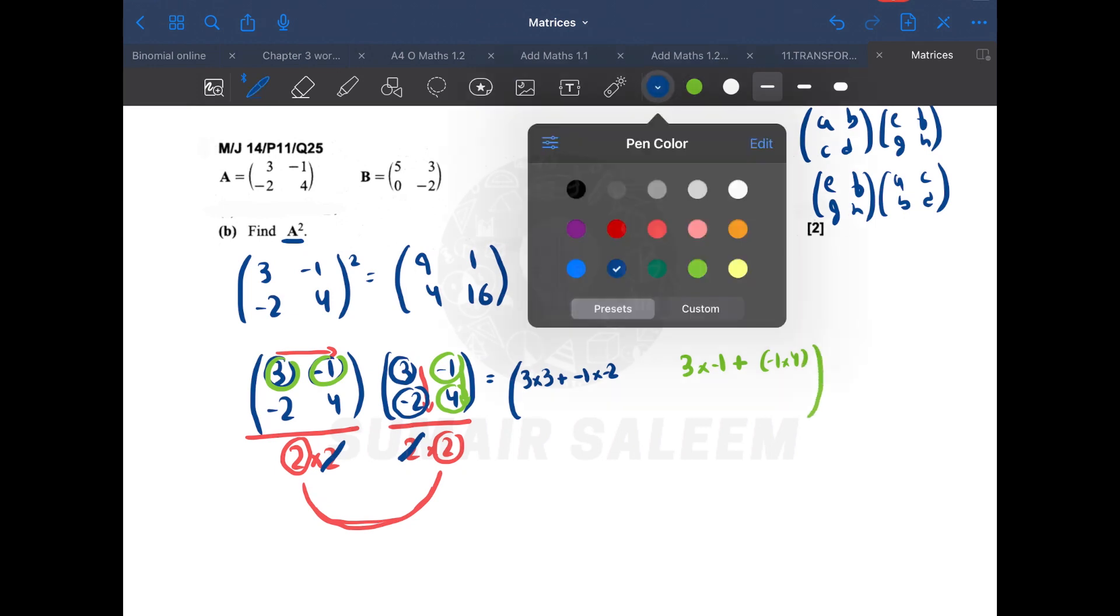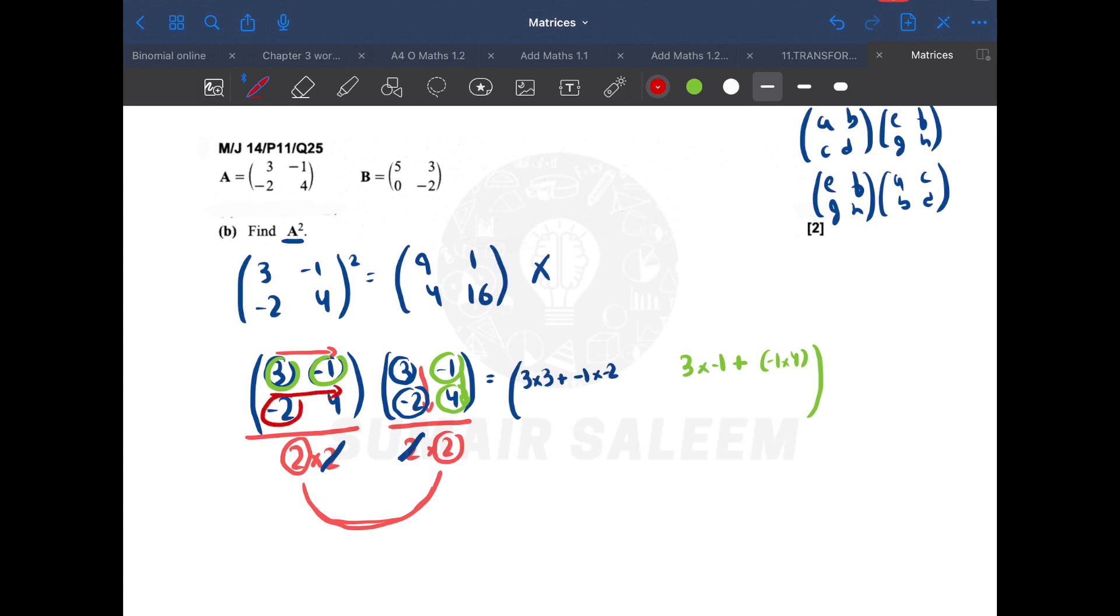Now this dive is done. Let's start again with a different color. This one: -2 into 3, dive is not complete yet, 4 into -2, right? Then give a gap and start all over again. This one: -2 into -1 plus 4 into 4. Let's calculate this. The first one will become 9 plus 2, that's 11. The second one will become -3 minus 4, that's -7. The third one will become -6 minus 8, that's -14. And the last one is 2 plus 16, that's 18. Did you get this?